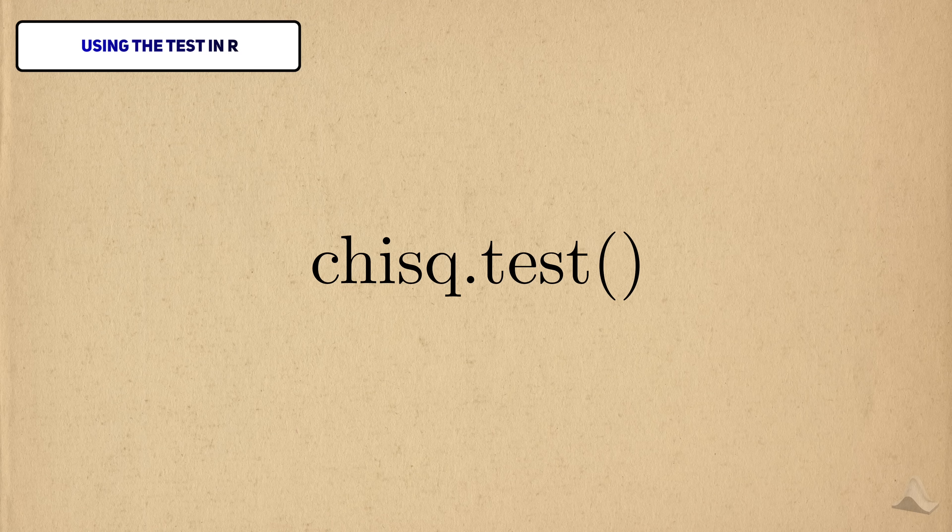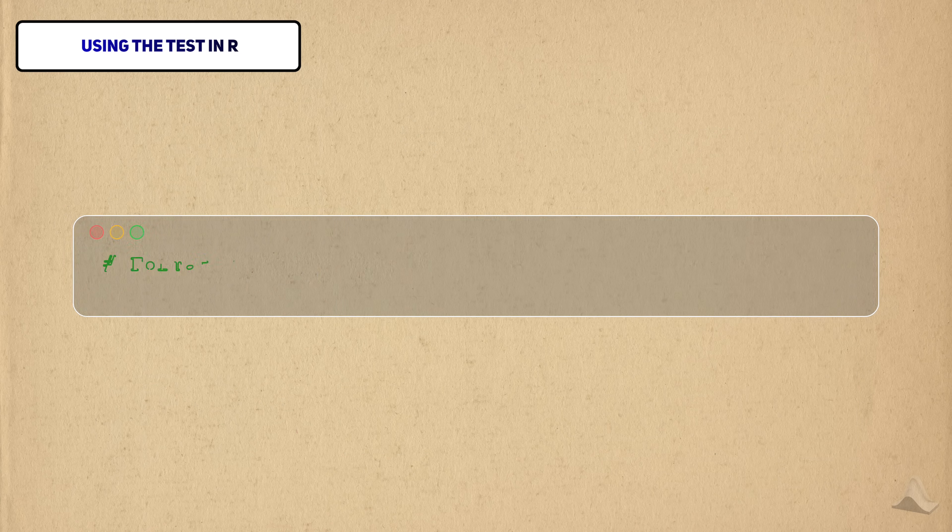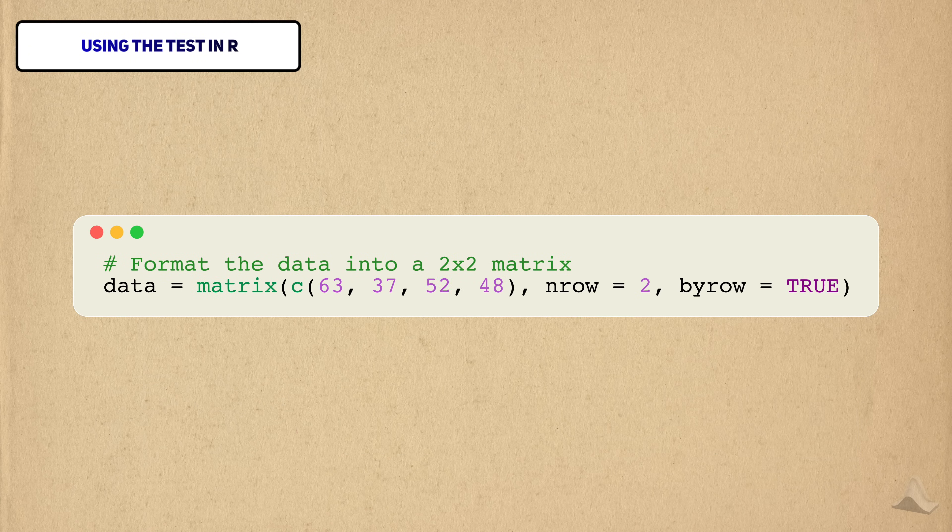With that, we have all of the ingredients needed to conduct the hypothesis test. The function that implements the chi-squared test in R is the chisq.test function. We'll use the data I showed earlier when walking through the test.